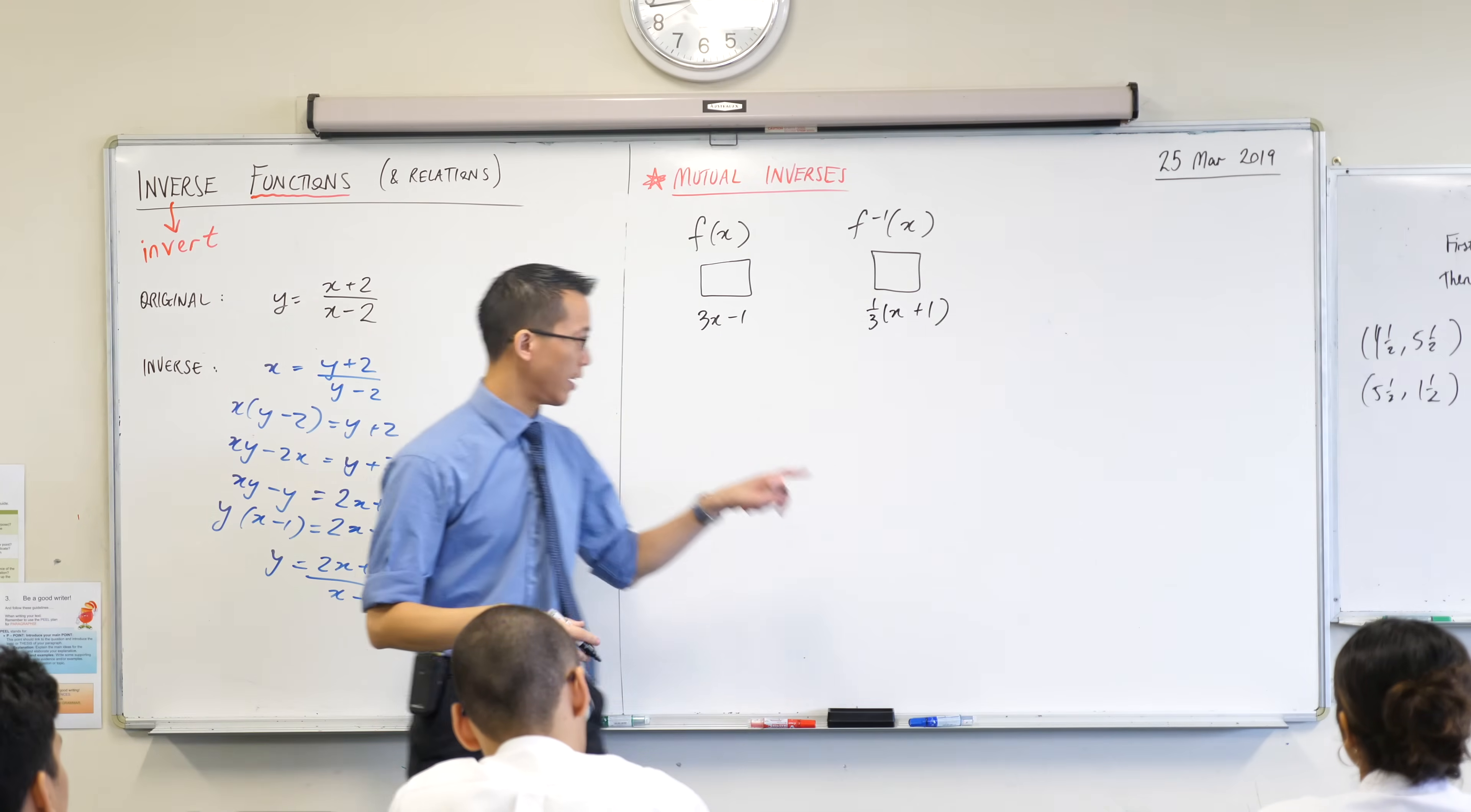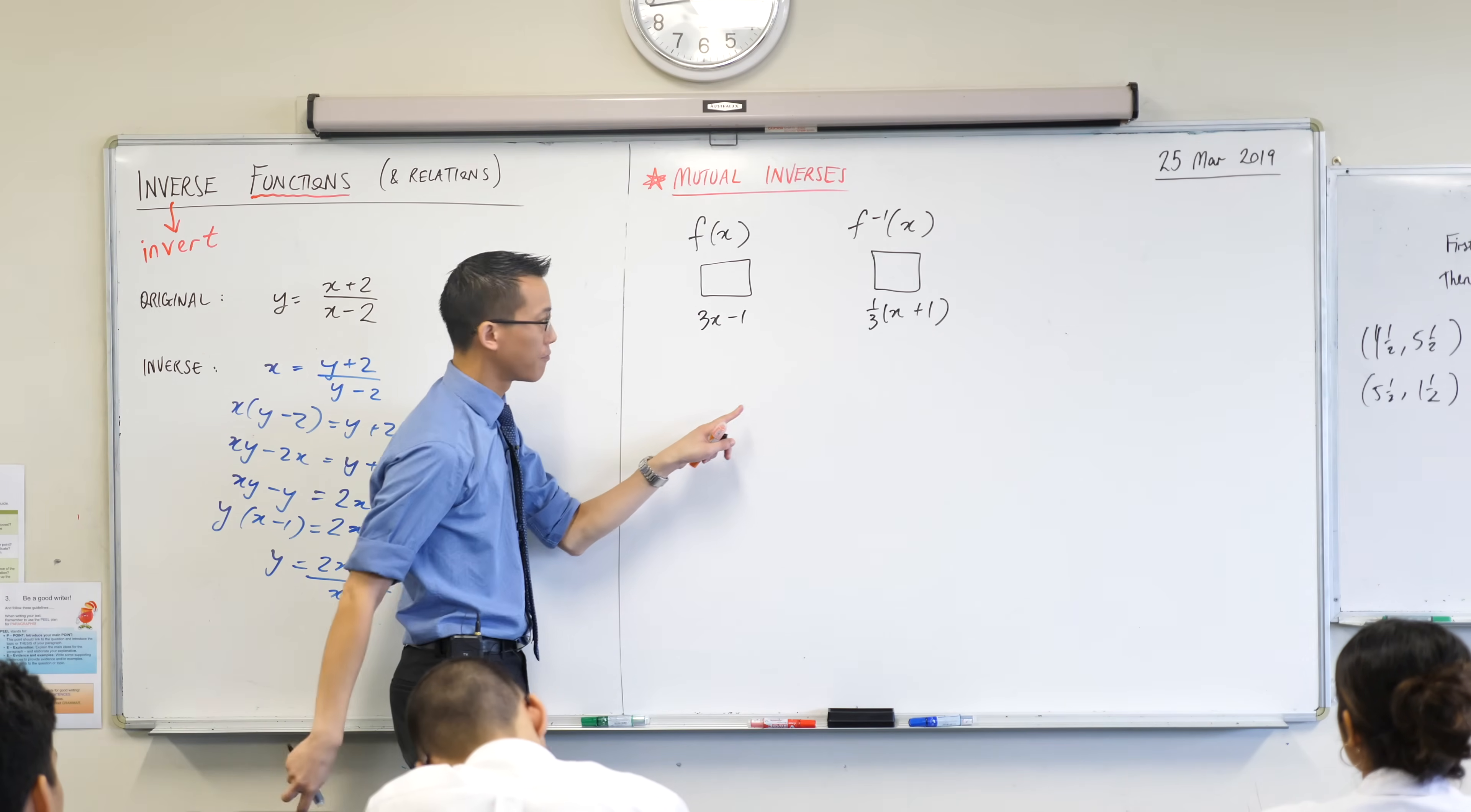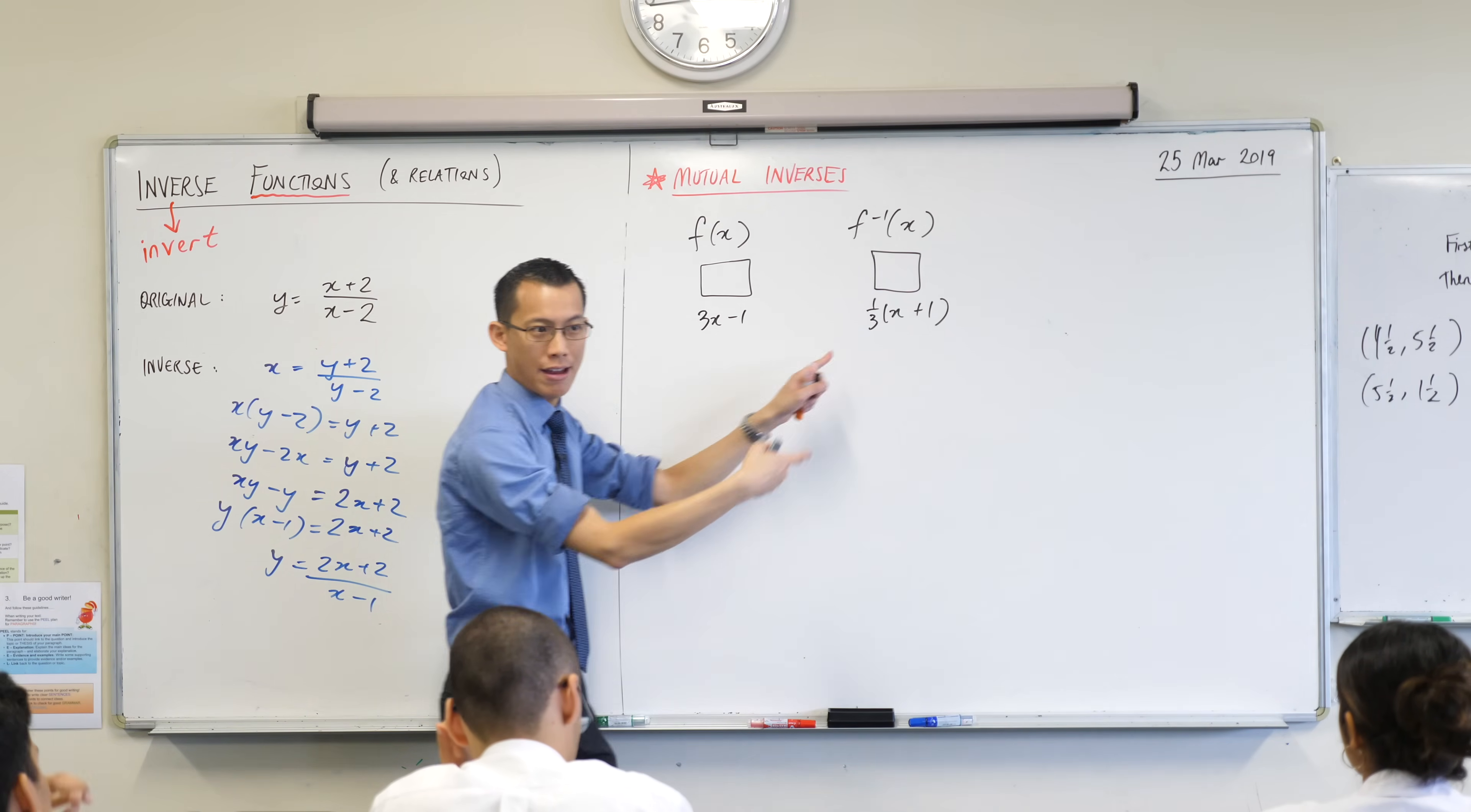So what are the instructions here? Take a number, an input, multiply it by three and then take away one. And this does everything but opposite - it'll add one and then divide by three.